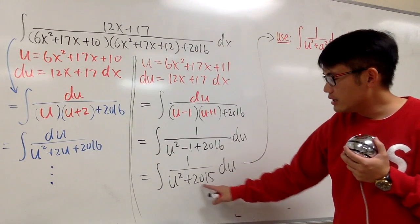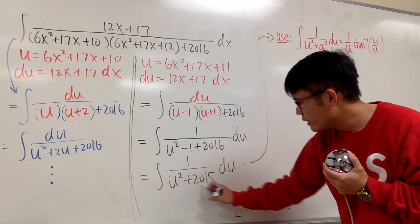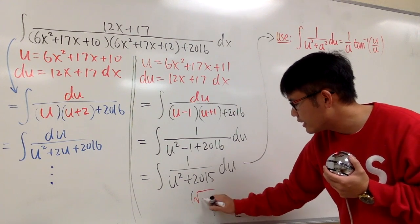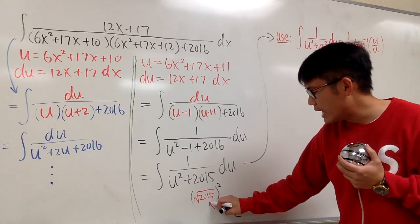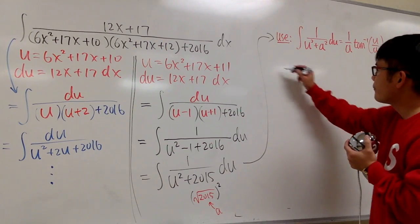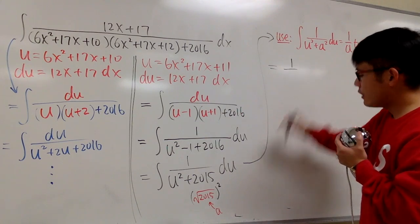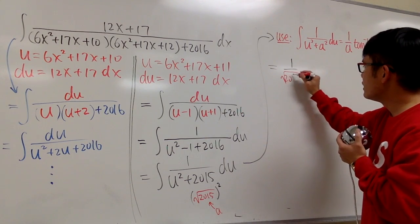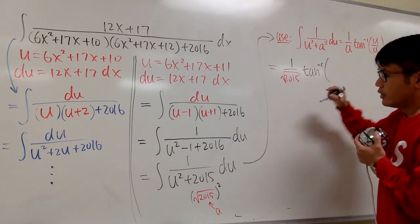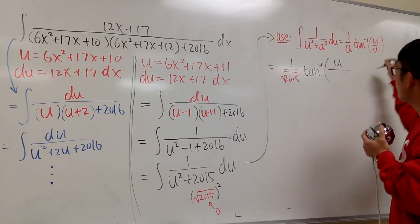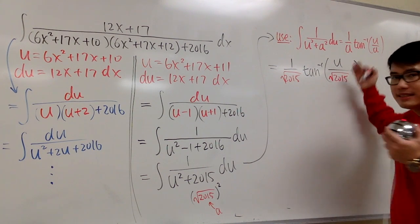We have u squared, and here it is, 2015. We have to look at this as something to the second power. So it's okay, we can look at this as the square root of 2015 squared. That's good, right? So that means that will be my a. So now, this is going to give us 1 over a, right? So we have 1 over square root of 2015 times the inverse tangent. u is just u for now, right? So u over a is once again that square root of 2015.